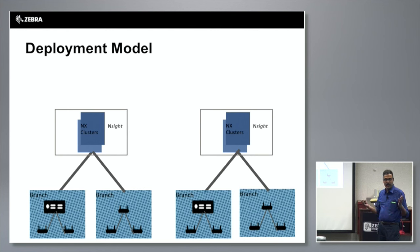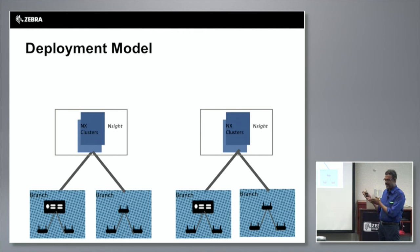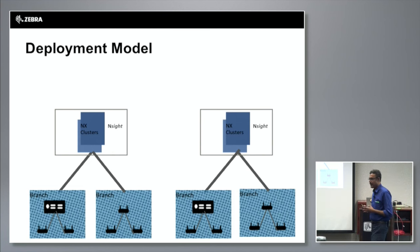If you have multiple NX clusters — some of our customers are north of 50,000 to 60,000 access points — they might have multiple NX clusters, and they have to run Insight separately on each.